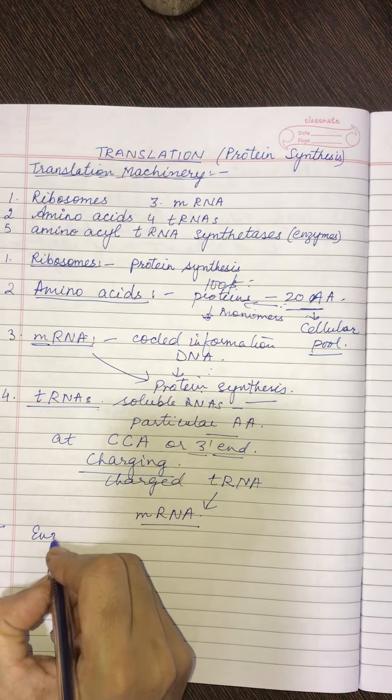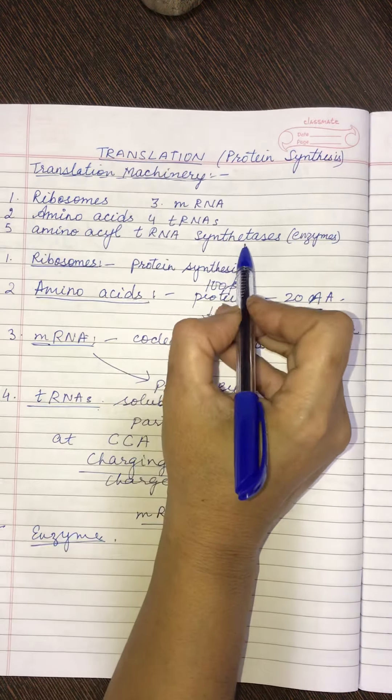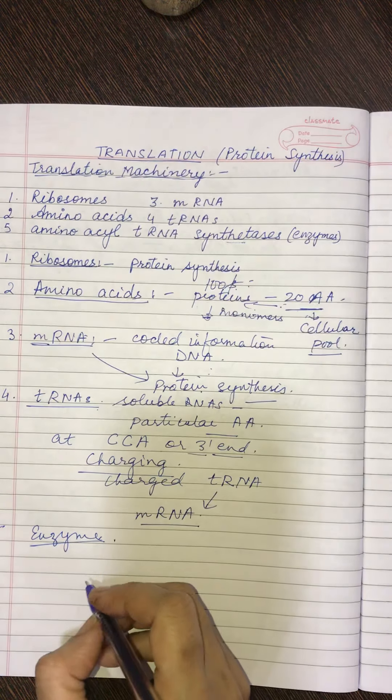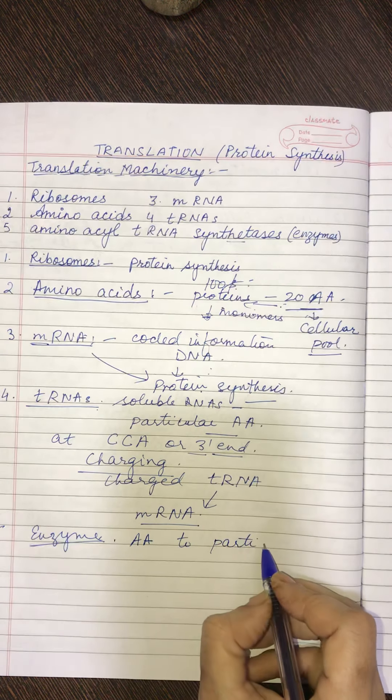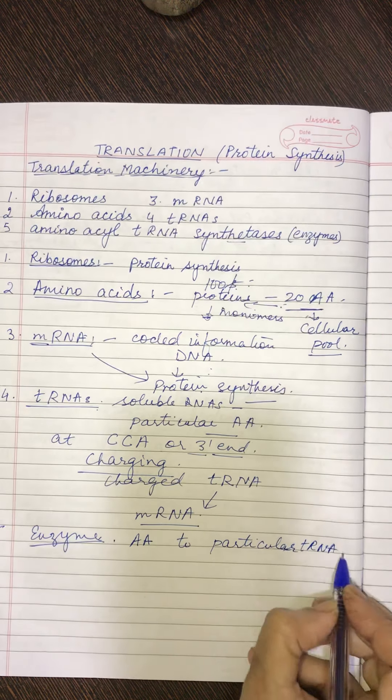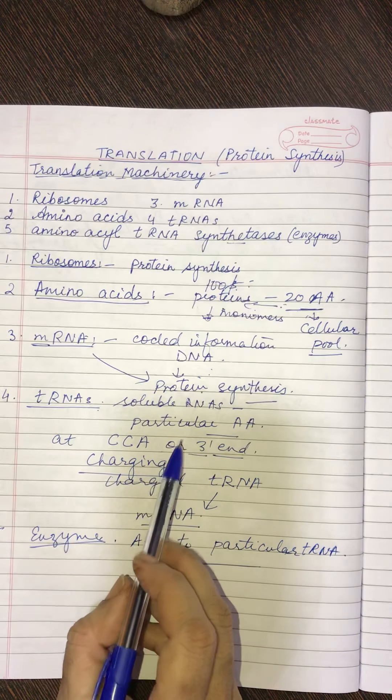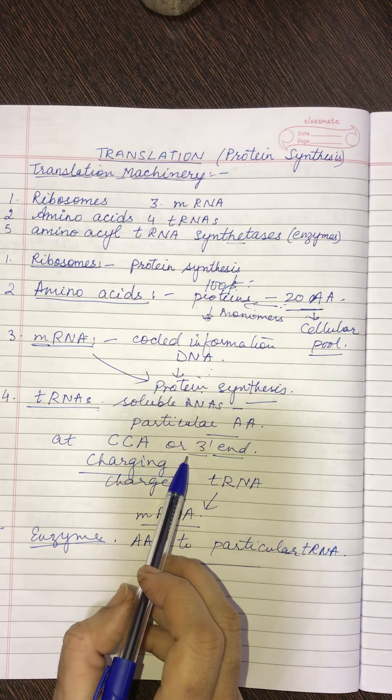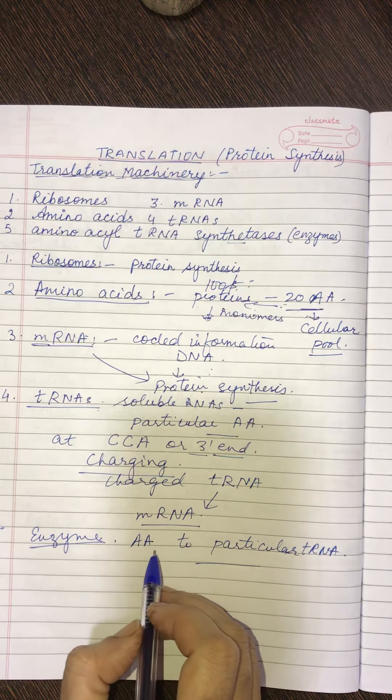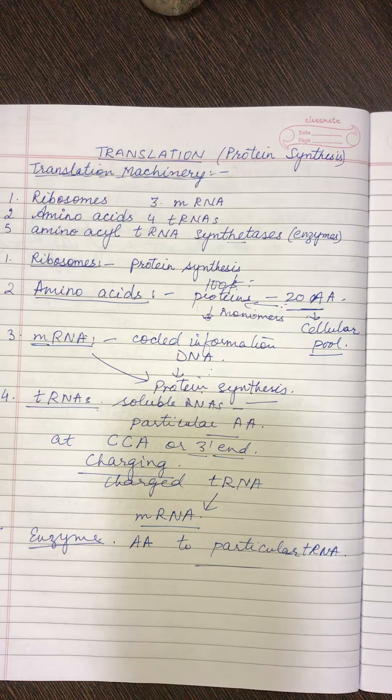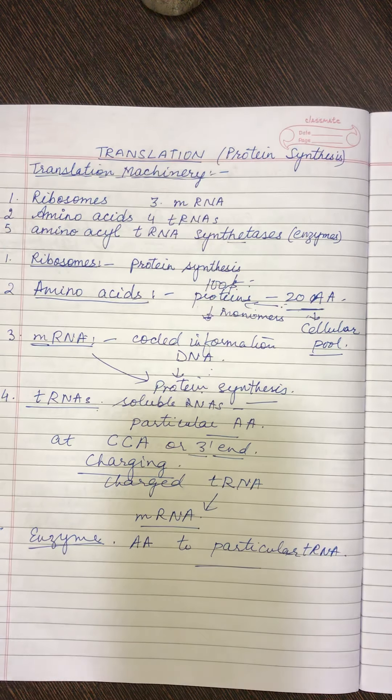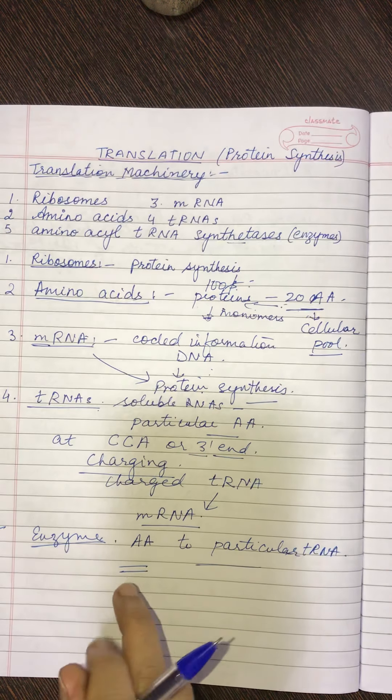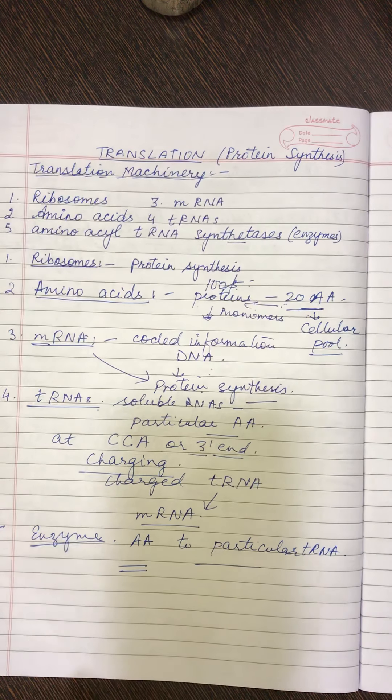Now, children, fifth is the enzyme. I am not going to write its name, amino acid tRNA synthetase. Now, it is the enzyme that helps in combining the amino acids to its particular tRNA. So, whenever the tRNA is attached to this amino acid, then it only takes place with the help of the enzyme. And this very enzyme, it is specific for each amino acid. It is also called amino acid activating enzyme. So, you remember this. Once you have studied about the translation machinery, then in the next video, we will do about the translation mechanism.